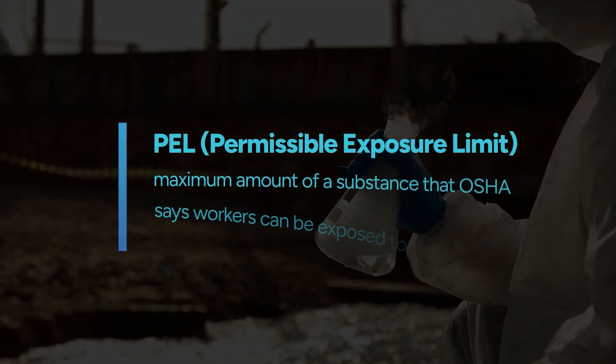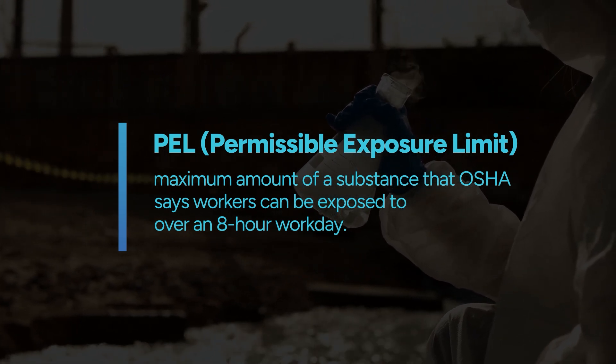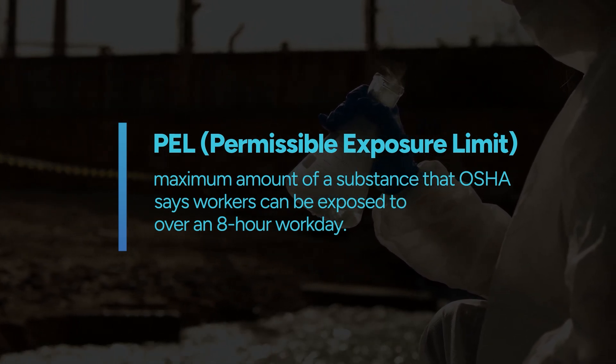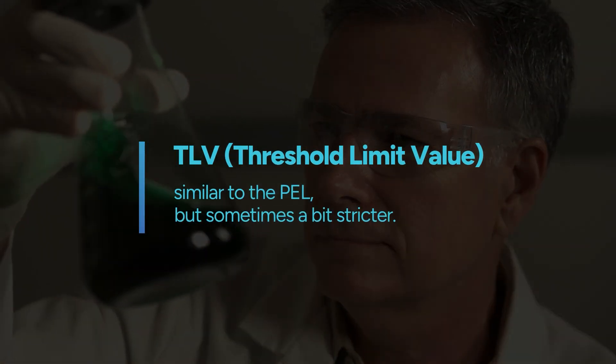There are a few different types of limits you'll hear about. PEL stands for permissible exposure limit. This is the maximum amount of a substance that OSHA says workers can be exposed to over an eight-hour workday. TLV is the threshold limit value, which is set by the American Conference of Governmental Industrial Hygienists, or the ACGIH. It's similar to the PEL but sometimes it's a bit stricter.